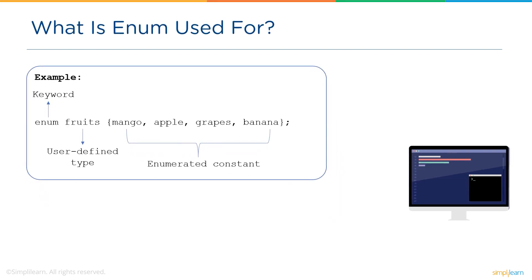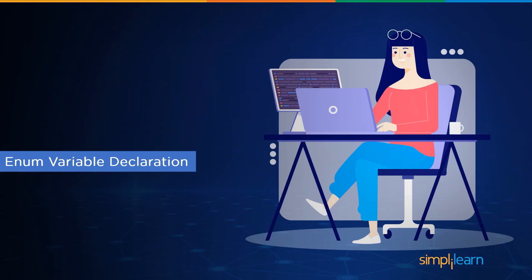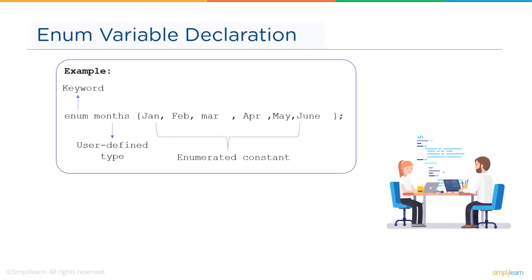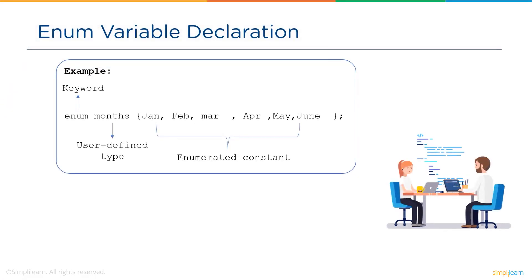In C programming, the compiler assigns integer values to all the enumeration constants by default, and that begins from zero, one, two, and so on. Now let's move on to the enum variable declaration.